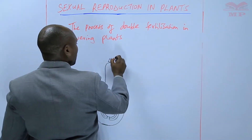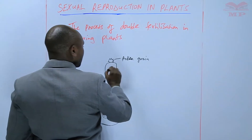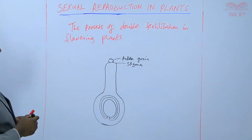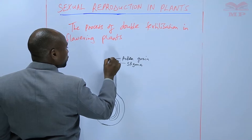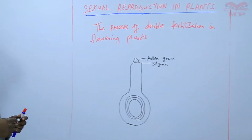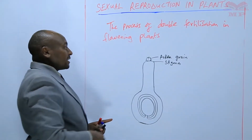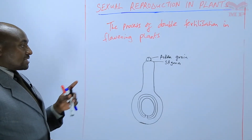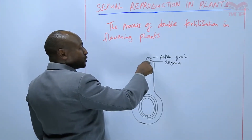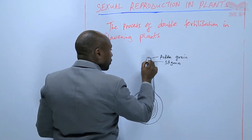So this is actually a pollen grain that lands on the stigma. The first thing we said about a pollen grain is it has two nuclei — there is the tube nucleus and there is the generative nucleus. The first thing that happens is that when that pollen grain lands on the stigma, it sticks there, because the stigma is sticky.